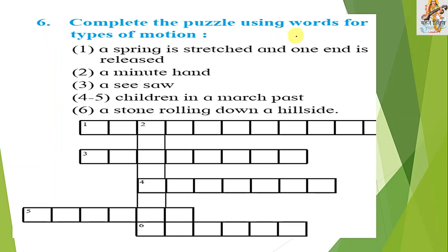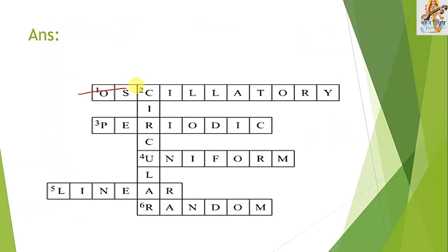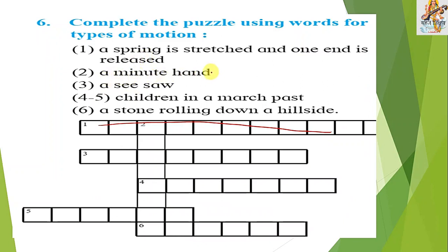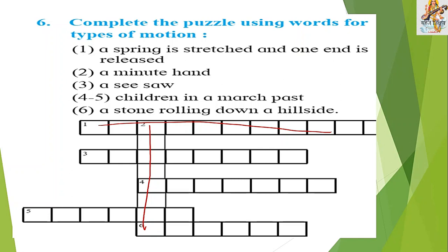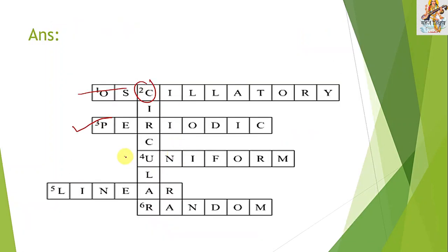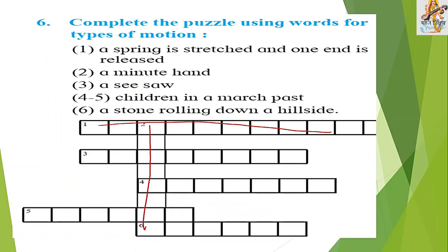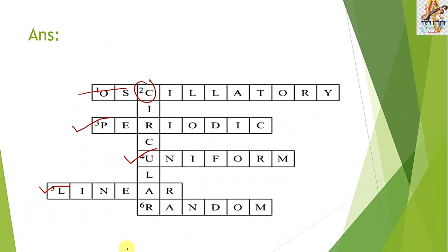Question 6: Complete the puzzle using types of motion. A spring stretched and released — oscillatory motion. A minute hand rotating around itself — circular motion. A comet — periodic motion, as it repeats after every interval of time. Children in a march past — uniform linear motion. A stone rolling down a hillside — random motion, since its speed and direction depend on external conditions like slope and other factors.